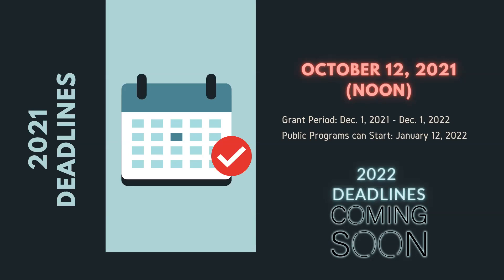For the January deadline, if your public program won't begin until after April 12th, you can wait and apply in January. I can tease that we are going to be increasing the funding for community project grants. So if your program doesn't start until mid-April or beyond and you can wait for the July deadline, you could be eligible for more funding. The October 12th deadline can support programs from January through December 1st, 2022, with an award amount of up to $5,000.